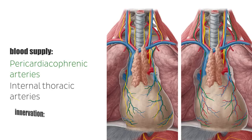The innervation of the pericardium is governed by several different branches, including the phrenic nerves, which give sensory fibers that control pain sensation, and the sympathetic trunks which carry vasomotor fibers.